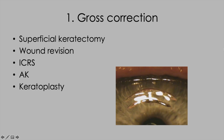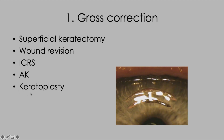Modalities for rebooting the corneal shape include superficial keratectomy, wound revision — for example, a step in the edge of a keratoplasty — intracorneal ring segments, astigmatic keratotomies (we're seeing a paired femtolaser keratotomy incision here). And if you've got a stage 4 keratoconus case or a post-infective scar deeper than approximately 200 microns, then you're looking at a new keratoplasty procedure, typically a DALK.